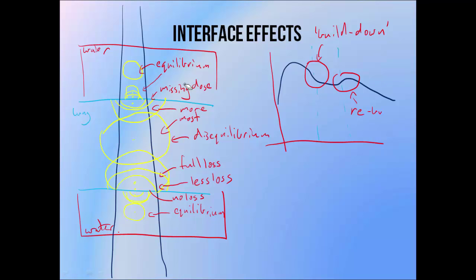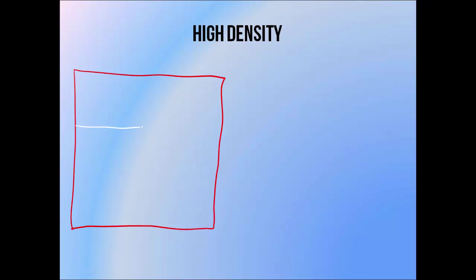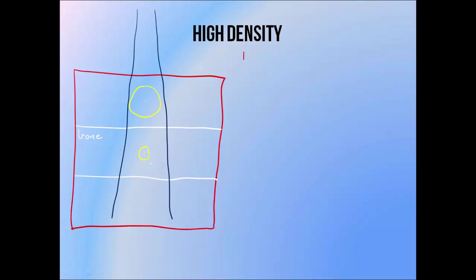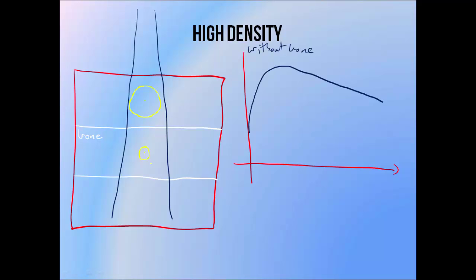The reverse of everything I've just said is also true for high density heterogeneities like bone. Since the density of bone is higher, the electron range is shorter, so if a field is big enough to produce equilibrium in water, it will also be big enough to do the same in bone. Comparing a PDD measured in this circumstance with one measured in a water phantom without any bone present: proximal to the bone the PDD curves are the same, and this time we see a greater attenuation of the beam inside the bone, so the dose falls off more rapidly with a higher gradient. And on the other side, there's less of the beam remaining, so there's less dose at these depths than there would be if there was no bone.